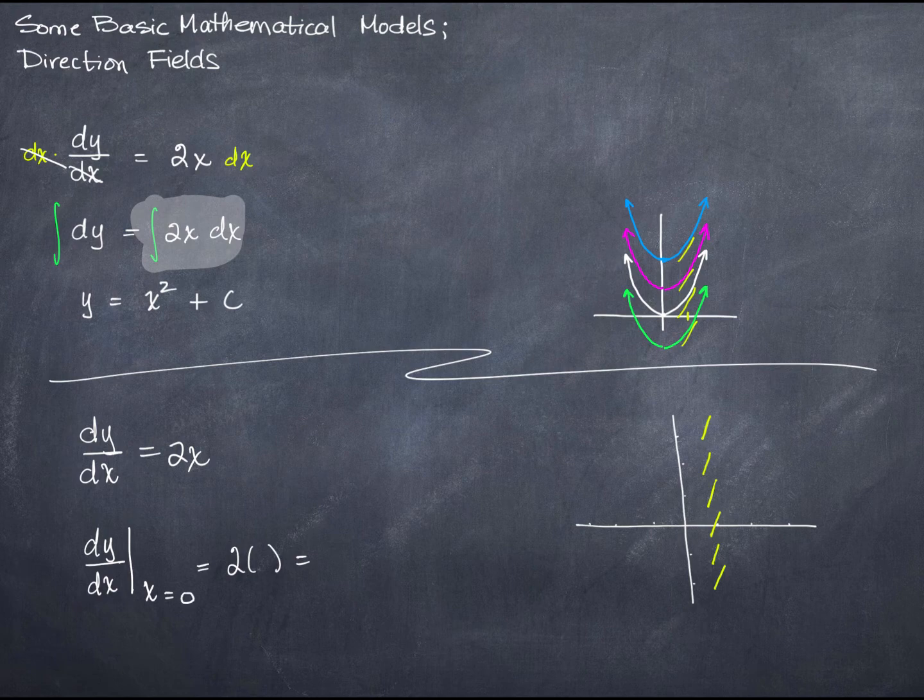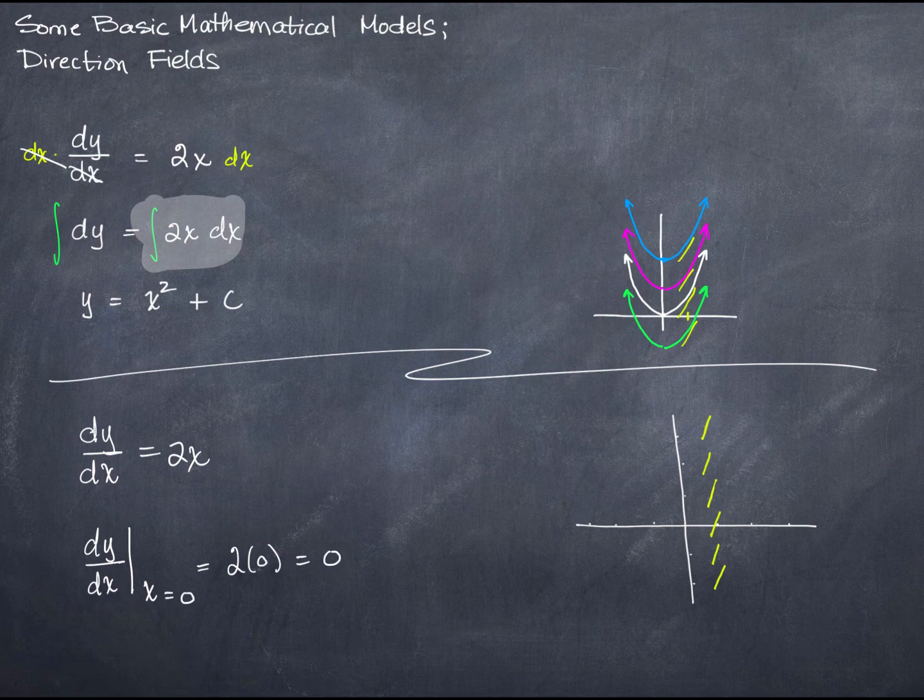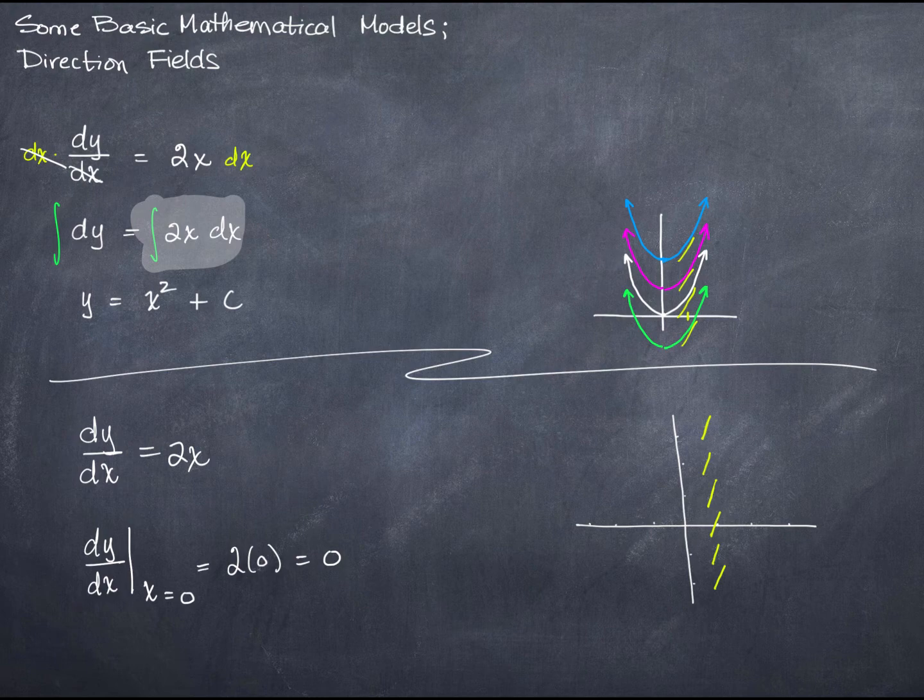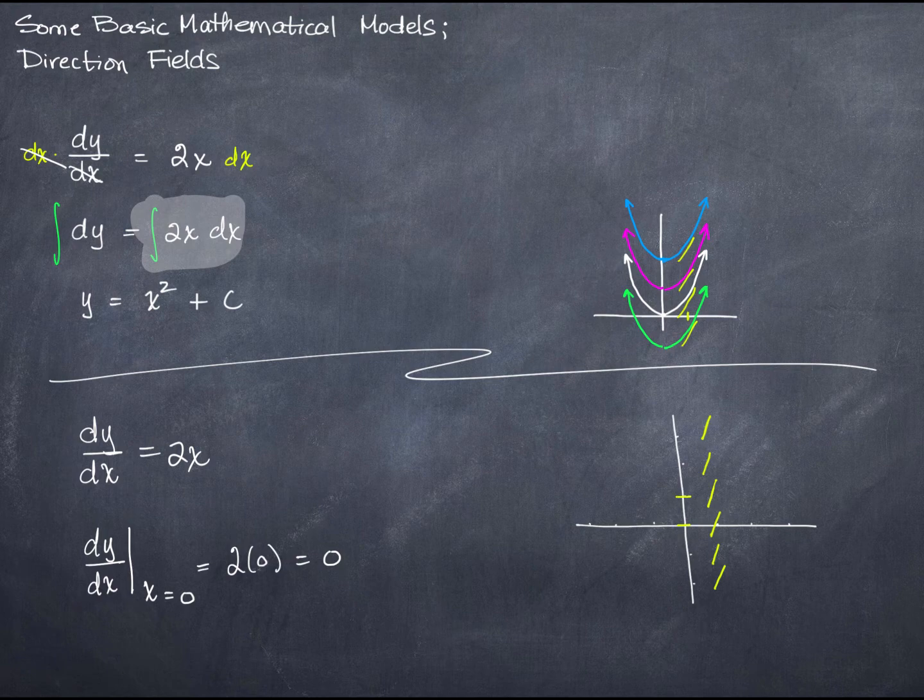At x equals 0, I get 2 times 0, which is 0. So no matter what y is, all along the line x equals 0, which is the y-axis, I have little mini slopes of 0 that look something like this.